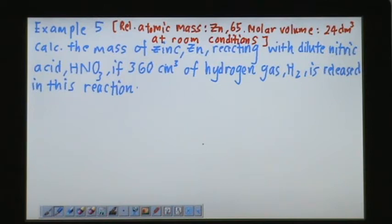Calculate the mass of zinc, Zn, reacting with dilute nitric acid if 360 cm³ of hydrogen gas, H₂, is released in this reaction.